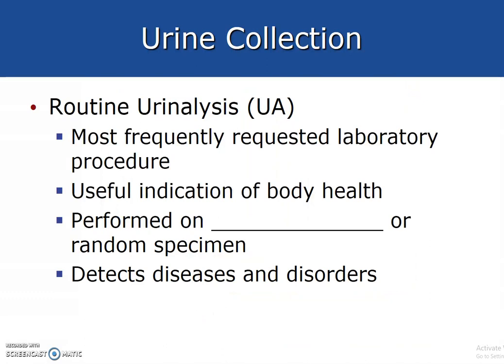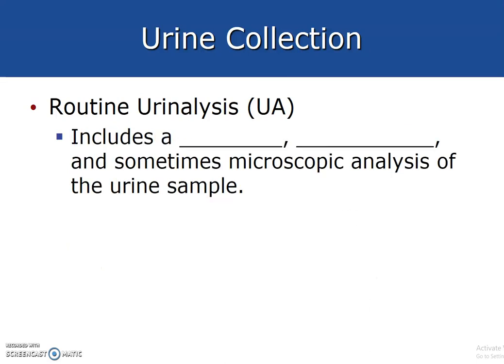Routine urinalysis, or UA, is the most frequently requested laboratory procedure and a useful indication of body health. It is performed on first morning or random specimens and detects diseases and disorders. It includes a chemical and physical, and sometimes microscopic, analysis of the urine sample.